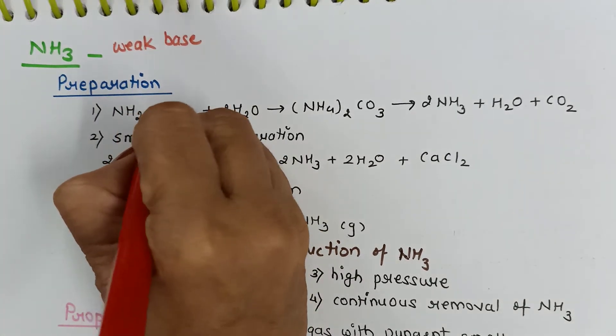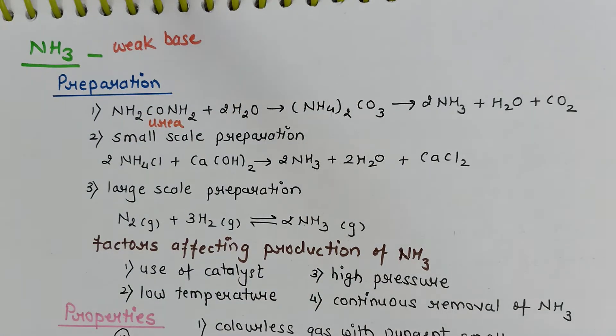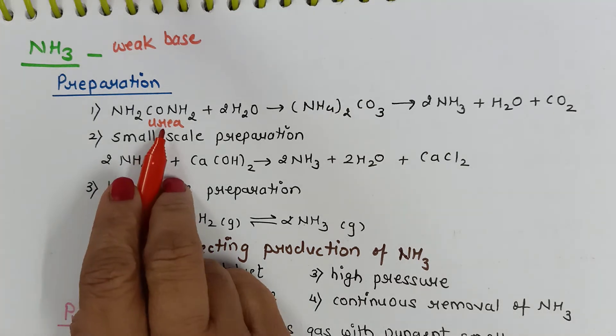Ammonia is present in small quantities in air and soil, where it is formed by the decay of nitrogenous organic material like urea. Urea gets converted to ammonium carbonate, which then gets converted to ammonia, H2O, and CO2.